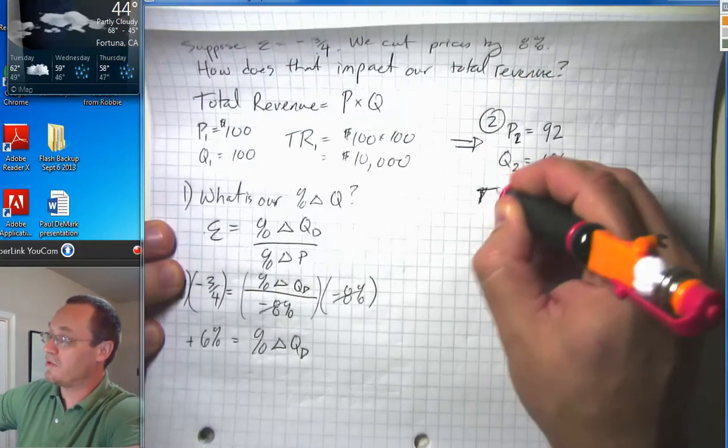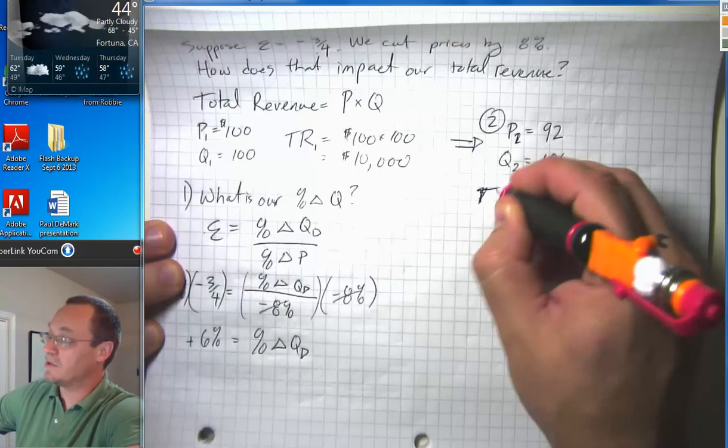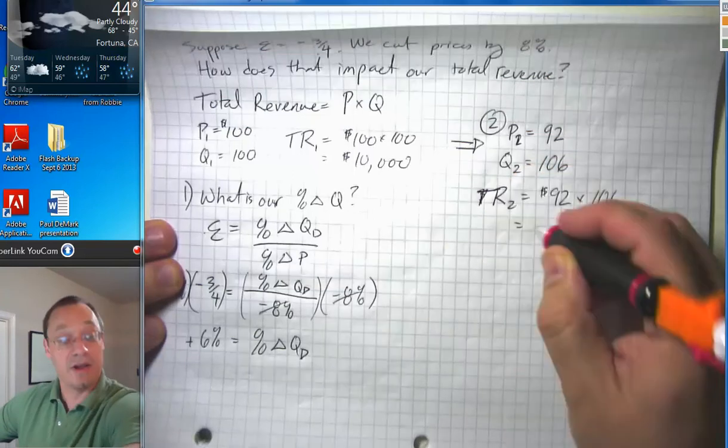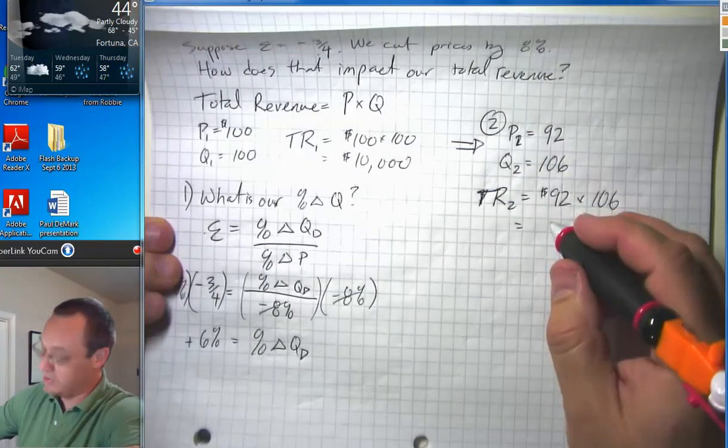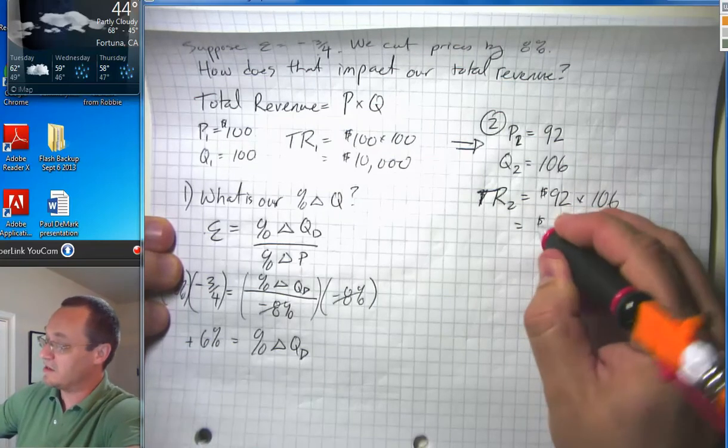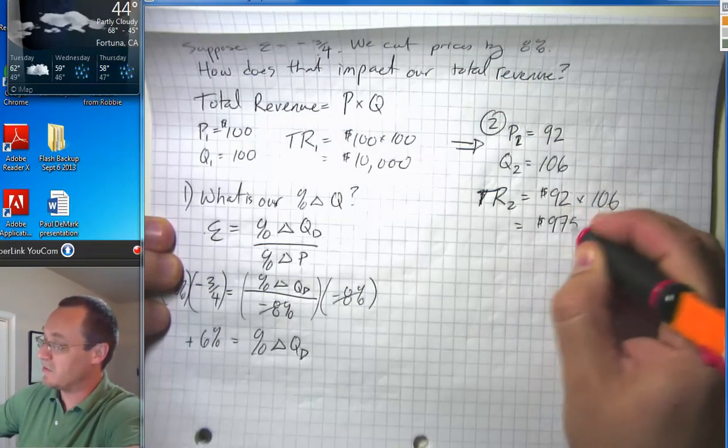So, total revenue two is going to be ninety-two dollars times a hundred and six units. Not something I can do in my head, but my notes tell me that that is nine thousand seven hundred and forty-two.